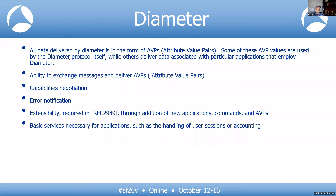All data is delivered in the form of AVPs — Attribute Value Pairs. Some AVPs are used for the Diameter protocol itself, while others deliver data associated with the particular application — for example, an AVP carrying the number of octets a subscriber used, or a server type AVP used by the protocol itself.